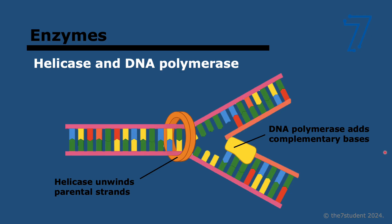Two key enzymes you need to remember at SL. First is helicase. Helicase is shaped like a ring, and it basically separates the two strands of DNA. What it does is it breaks the hydrogen bonds between bases — adenine and thymine bind through two hydrogen bonds, and cytosine and guanine bind through three hydrogen bonds. So helicase breaks that and opens the strands up.